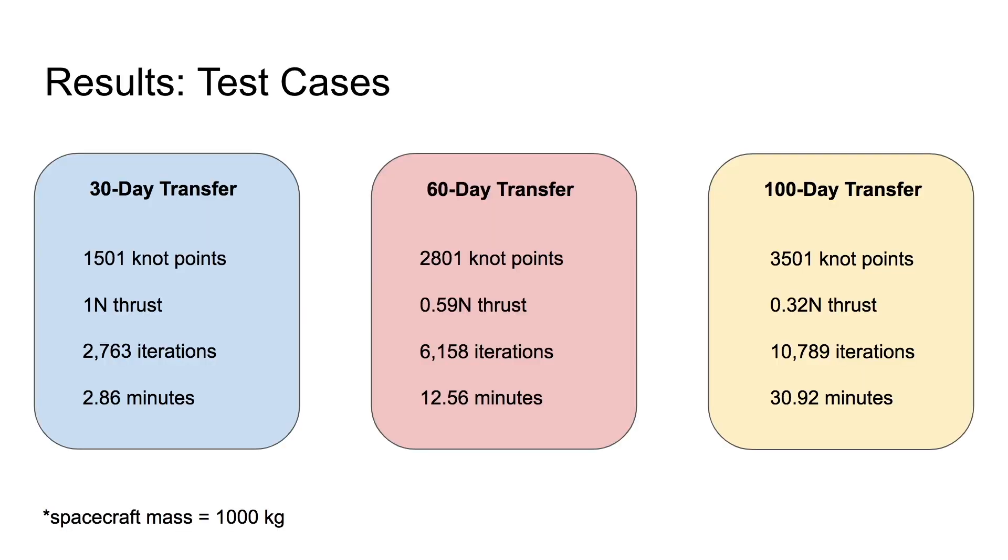To demonstrate the effectiveness of our formulation, three different test cases were used. The first was a 30-day transfer, the second was a 60-day transfer, and the third was a 100-day transfer. The 30-day transfer used 1,501 knot points, was constrained to 1 newton of thrust, and the solver solved it in 2,763 iterations in a little less than 3 minutes. For the 60-day transfer, 2,801 knot points were used, the thrust was constrained to 0.59 newtons, and the solver achieved convergence in 6,150 iterations in a little less than 13 minutes.